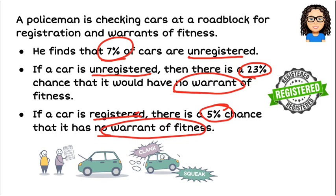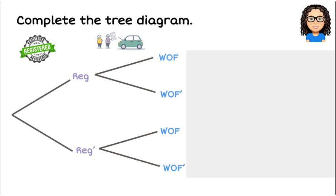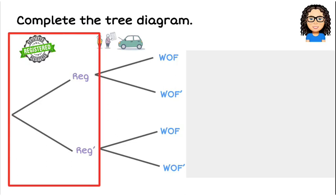We think about the two events that are occurring — there are two things we have probabilities about. One event is about whether the car is registered or not, and the other is about whether there's a warrant of fitness. Those are the two layers of the tree diagram. The first layer is about whether or not the car is registered — so we have registered or not registered.